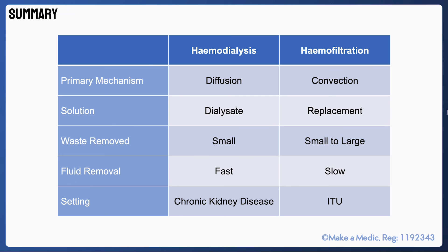Here is a summary slide recapping the main differences between haemodialysis and haemofiltration. They fundamentally differ in their main mechanism of action: haemodialysis works primarily by diffusion, whereas haemofiltration works by convection. Dialysis uses a dialysate solution with which the blood exchanges solutes, whereas in filtration a replacement solution is administered to achieve physiological fluid and electrolyte balance. Dialysis is good for removing small solutes, whereas filtration is effective for a broader range of solutes and toxins. Fluid removal in dialysis is very fast — a session usually takes only about four hours — whereas fluid removal in haemofiltration is much slower, causing less haemodynamic instability and making it better suited for critically unwell patients. As such, haemodialysis is a form of long-term renal replacement therapy for patients with chronic kidney disease, whereas haemofiltration is a very useful tool in intensive care settings.